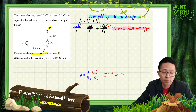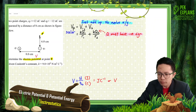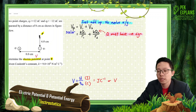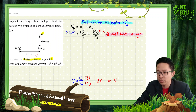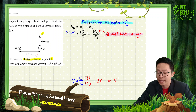Potential is a scalar quantity. For scalar quantity, you don't need to do XY components, you don't need to draw arrows — there's no direction, no vector. You just total up, just add up.